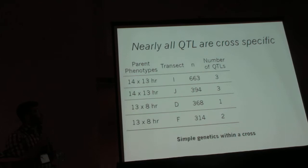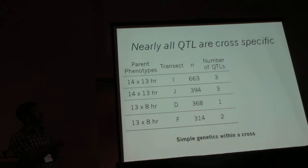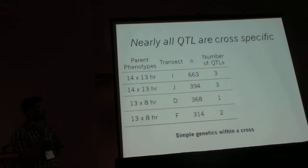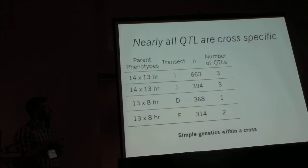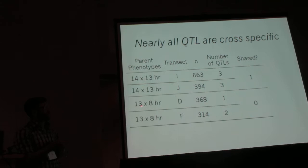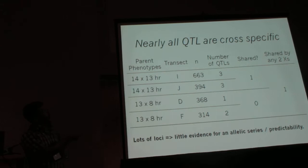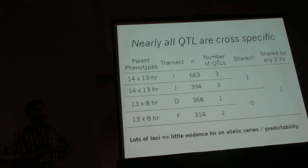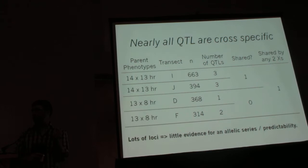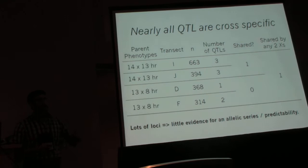Within a given transect, divergence in critical photoperiod appears to be rather simple. There is one shared QTL found between the two Cascades crosses, but nothing was shared between the two Sierra crosses. Across the entire range, that one shared QTL was the only QTL that appeared in any two crosses. This suggests there are at least eight loci that can tweak this one parameter of how flowering responds to the environment, with little evidence for an allelic series modulating this parameter across the range.